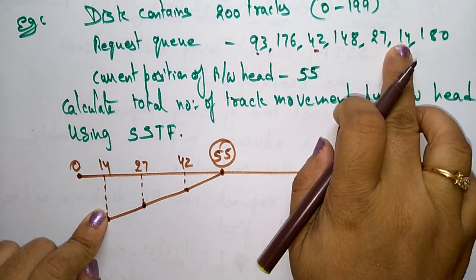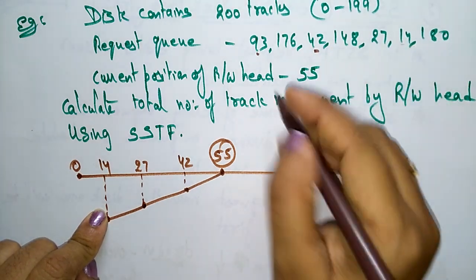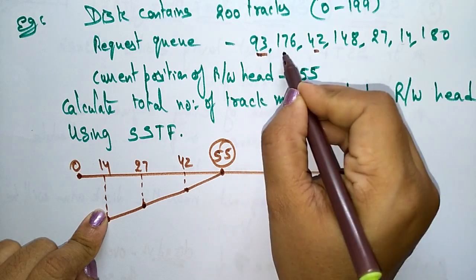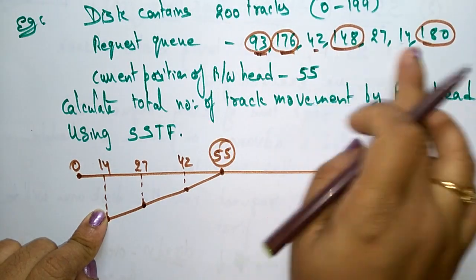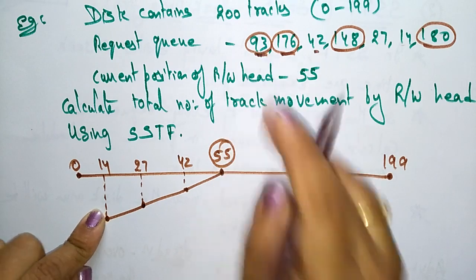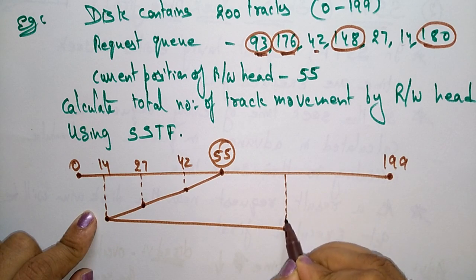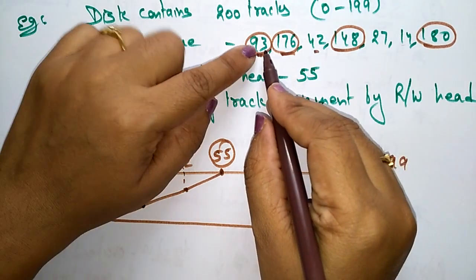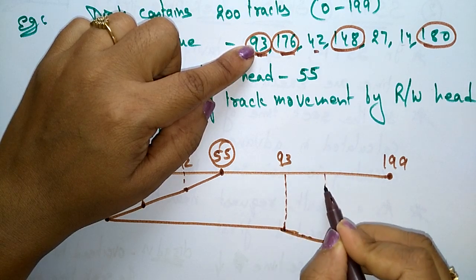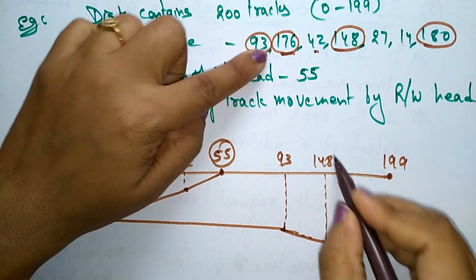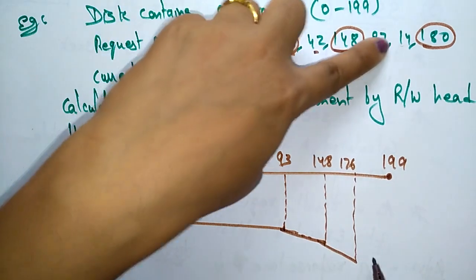From 14, having already visited 27 and 55, the nearest among the remaining tracks — 93, 176, 148, and 180 — is 93. So it goes back to 93. From 93 it goes to 148, then 176, then finally 180.